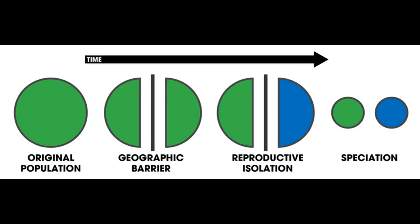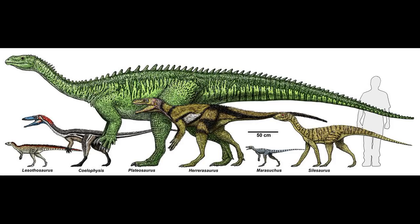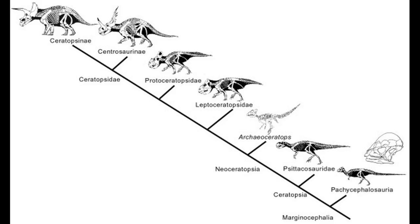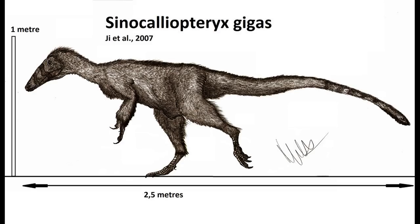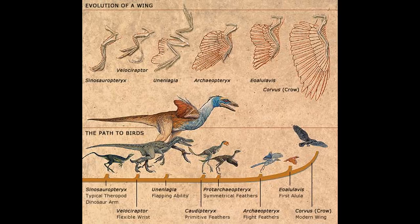All clades first originated with a single progenitor species after it speciated from other lineages. This initial distinction between this progenitor and its sister species, which would start their own respective clades, would have been very subtle. Under evolution, we would expect that the earliest members of a new clade would look extremely similar to members of other closely related clades. We saw this in the earliest dinosaurs, pachycephalosaurs and ceratopsians, and tyrannosaurs and compsognathids. Unsurprisingly, birds are no exception.